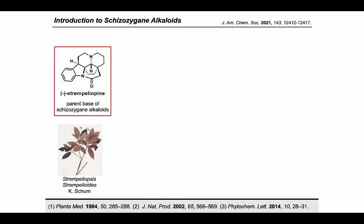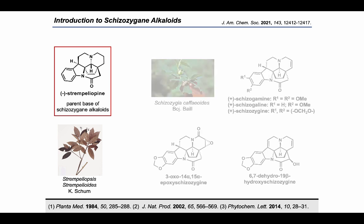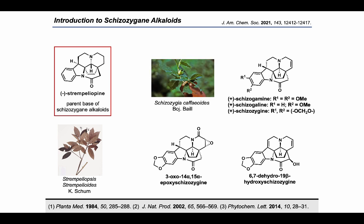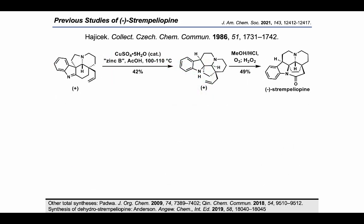Strempeliapine was first isolated from the roots of the Cuban plant Strempeliopsis strempelioides. This natural product is the parent base of the schizozygene alkaloids, members of which were isolated later in 2002 and 2014 from the stems and roots of Schizozygia caffaeoides. They include schizogamine, schizogalene, and schizozygene as well as its two congeners.